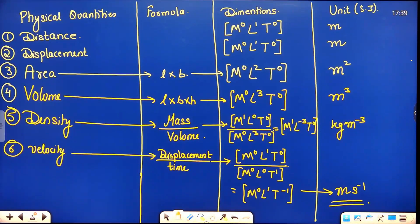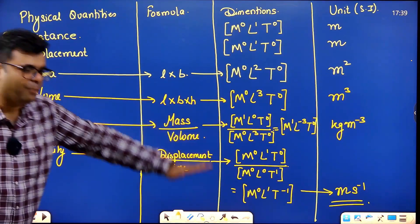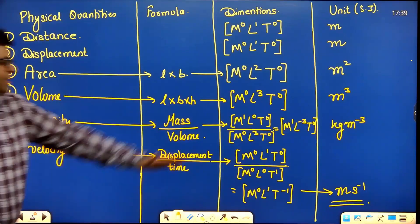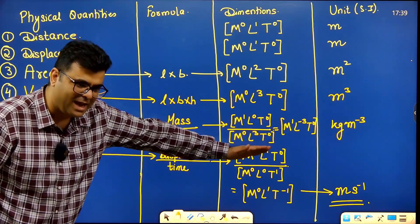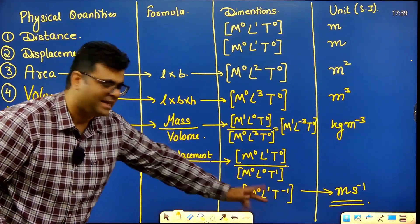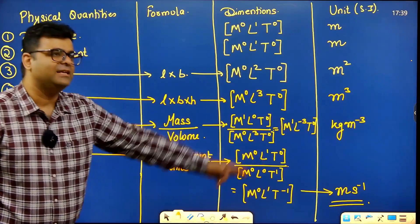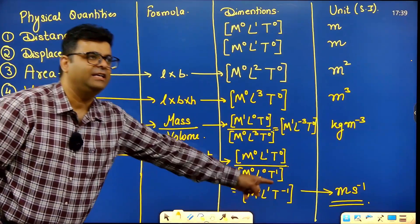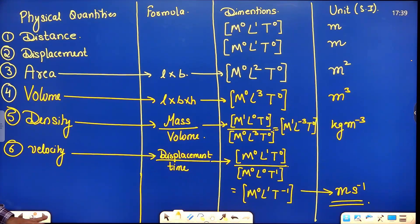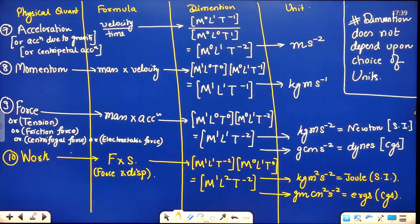Velocity is length upon time, or displacement upon time. Numerator has length, denominator has time. Combine them: L¹T⁻¹, i.e., M⁰L¹T⁻¹. Same base — we subtract the powers.